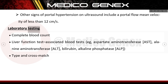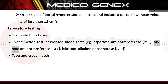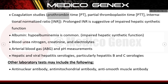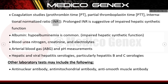Laboratory testing includes a complete blood count, liver function tests, and associated blood tests such as aspartate aminotransferase (AST), alanine aminotransferase (ALT), bilirubin, and alkaline phosphatase (ALP). Type and crossmatch as well as coagulation studies including prothrombin time (PT), partial thromboplastin time (PTT), and international normalized ratio (INR) are performed; a prolonged INR is suggestive of impaired hepatic synthetic function.